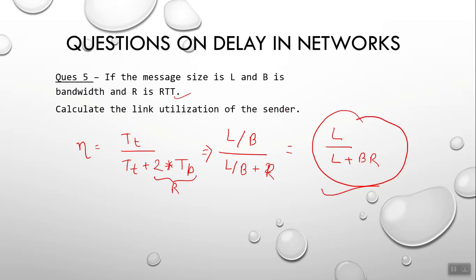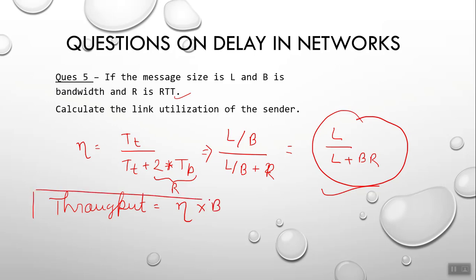One more thing: throughput. Throughput is calculated by multiplying efficiency by bandwidth. That is, throughput = efficiency × bandwidth. Thanks for watching.